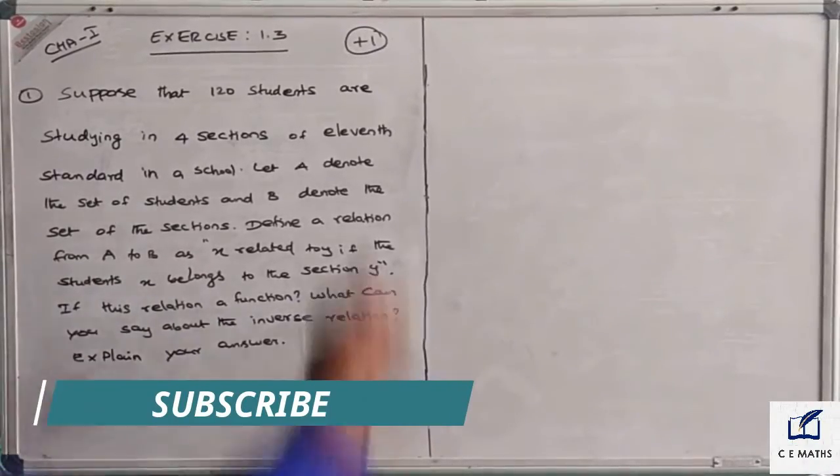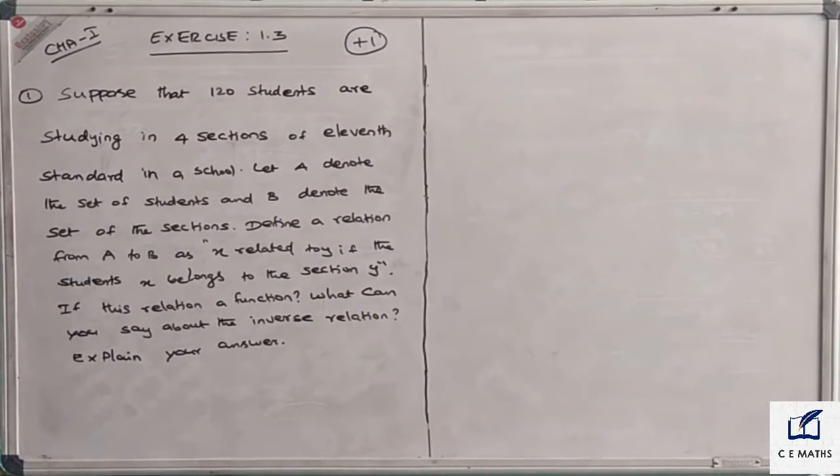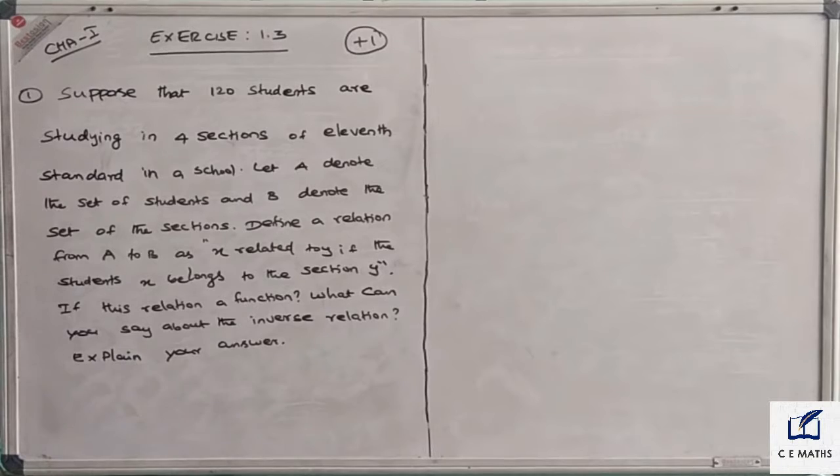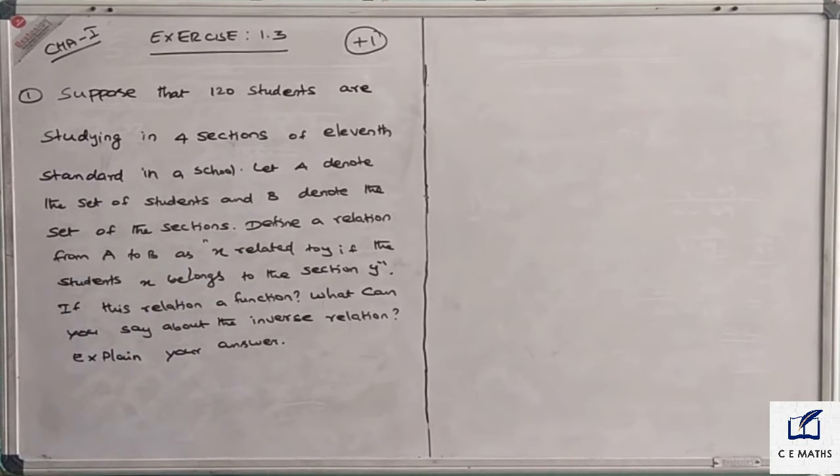CBSE Class 11 Plus One Exercise 1.3. The first question: Suppose that 120 students are studying in four sections of 11th standard in a school. A denotes the set of students, B denotes the set of sections. Define a relation from A to B.